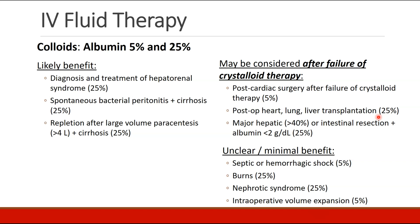At the hospital where I work, people use an awful lot of albumin without evidence-based reasoning and without a clear understanding of accepted indications. The official published guidelines suggest indications including patients with hepatorenal syndrome, bacterial peritonitis with cirrhosis, and patients who've had a large-volume paracentesis with cirrhosis. There may be some benefit after cardiac surgery, or heart, lung, and liver transplantation, or major hepatic or intestinal resections. But using albumin for septic or hemorrhagic shock, burns, nephrotic syndrome, or general intravascular volume expansion has very little benefit and may even be harmful.